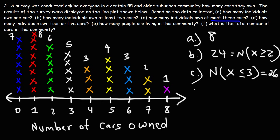Now for part D: how many individuals own four or five cars? Looking at those two columns, we have three individuals who own four cars and four individuals who own five cars. So we have a total of seven individuals who own four or five cars.